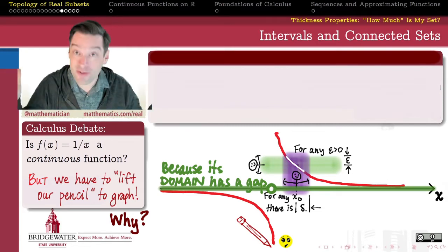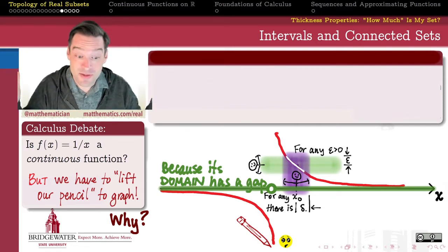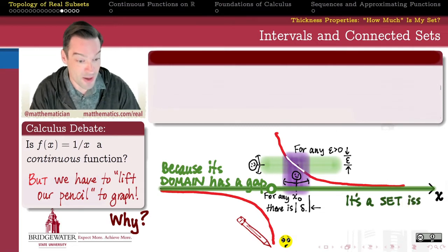And if my domain has two separate pieces, then of course my graph can have two separate pieces. So don't blame the function, don't blame its formula, blame the set, the domain. It's a set problem, not a formula problem.